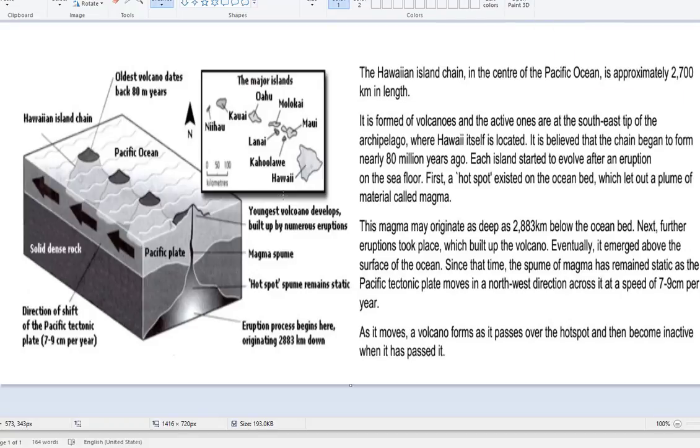Our next script is a map, indicating how the Hawaiian islands were formed. Now, if we look at the first phrase here, the Hawaiian island chain, in the center of the Pacific Ocean, is approximately 2,700 kilometers in length. But this doesn't tell us what the diagram, or map rather, well there's a map and a diagram. It doesn't tell us what the point is. The point is not to tell us where the Hawaiian island chain is, or how long it is. The illustration shows how the island chain was formed. It's completely missing from this.